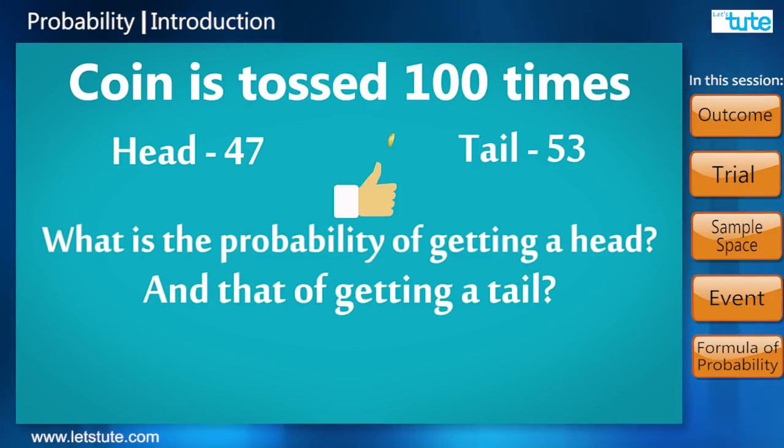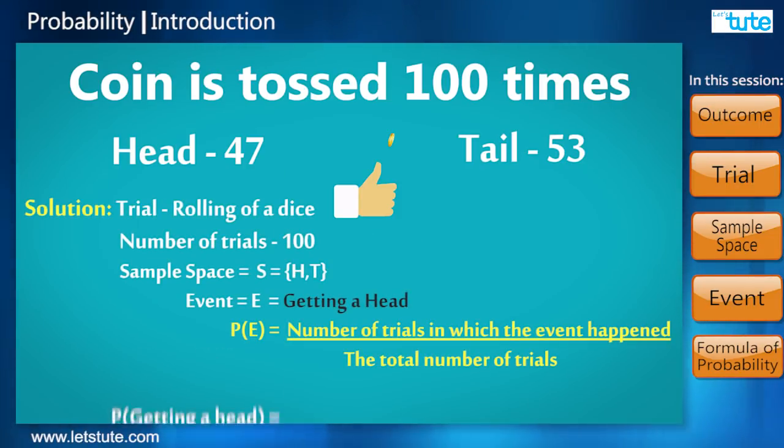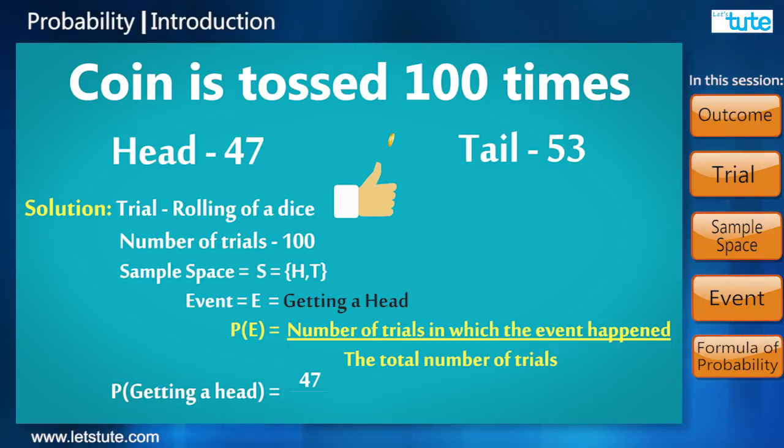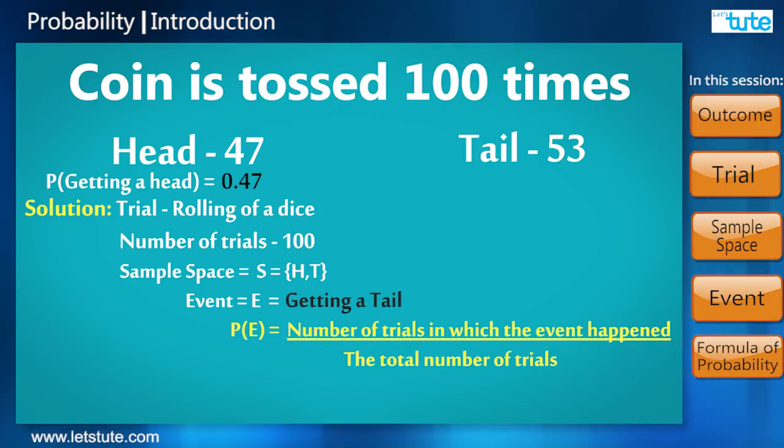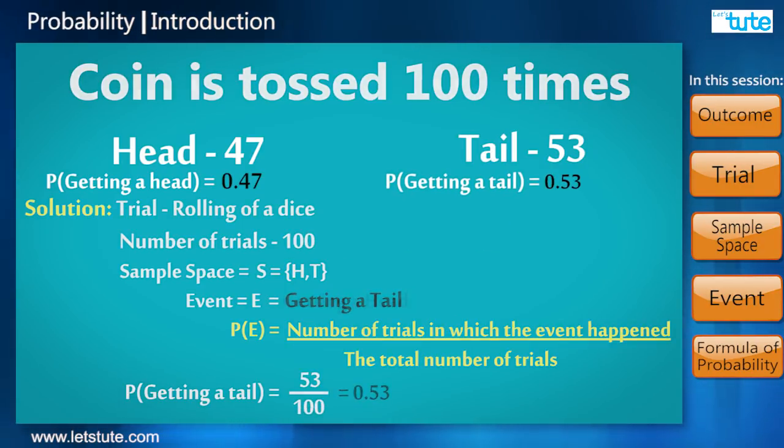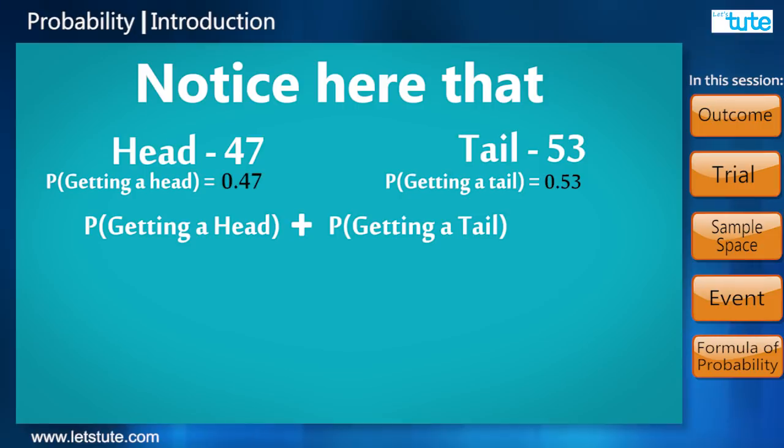So probability of getting a head is 47 upon 100, or 0.47. Probability of getting a tail is 53 upon 100, or 0.53. Notice here that probability of getting a head plus probability of getting a tail when added together gives us one.